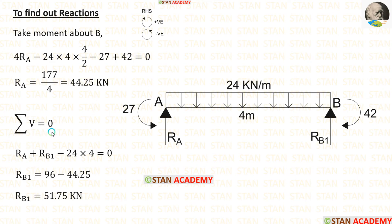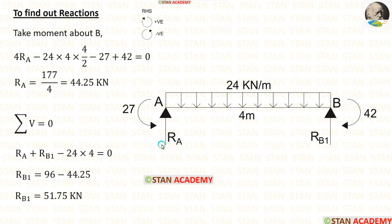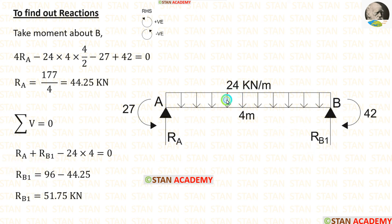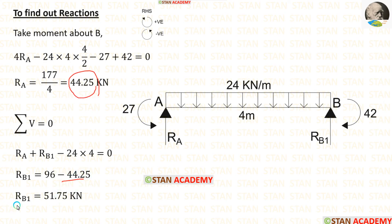Now using the rule that the summation of vertical forces equals zero, we can calculate RB1. RA and RB1 are upward (positive), and the UDL is downward (negative). For UDL, we multiply by the distance to get the total load. Applying the value of RA already calculated, we get RB1 = 51.75 kN.